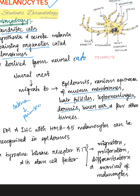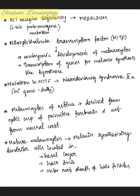The only exception is the melanocytes of the retina, which are derived from the primitive optic cup of the forebrain and not from the neural crest. On electron microscopy and immunohistochemistry with HMB45, melanocytes can be recognized in the epidermis. The tyrosine kinase receptor and its stem cell factor are responsible for the migration, proliferation, differentiation, and survival of melanocytes. Any defect in this tyrosine kinase receptor — or KIT receptor deficiency — can lead to piebaldism.